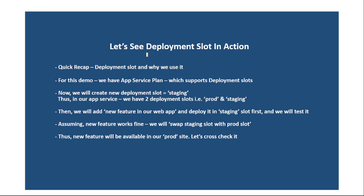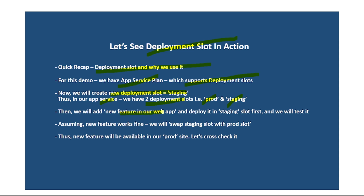In this video, let's see deployment slots in action. We already discussed deployment slots in detail in our previous video, but we'll have a quick recap. We are using an app service plan which supports deployment slots. We will create a new deployment slot called staging, so our app service will have two slots: production and staging. We'll deploy a new feature to staging first, test it, then swap staging with production so the new feature is available on the production site.